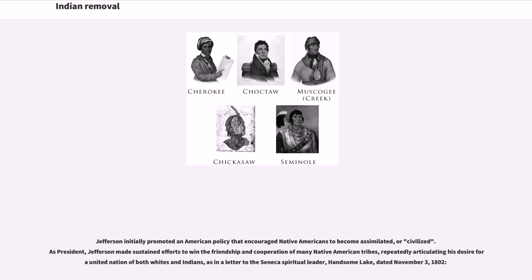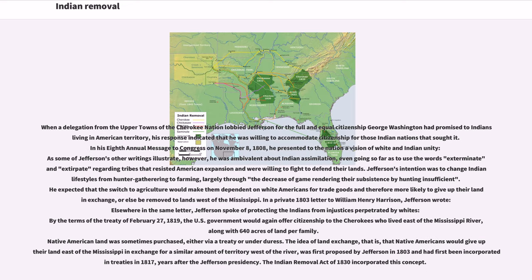Jefferson initially promoted an American policy that encouraged Native Americans to become assimilated, or civilized. As president, Jefferson made sustained efforts to win the friendship and cooperation of many Native American tribes, repeatedly articulating his desire for a united nation of both whites and Indians, as in a letter to the Seneca spiritual leader Handsome Lake, dated November 3, 1802. When a delegation from the upper towns of the Cherokee Nation lobbied Jefferson for the full and equal citizenship George Washington had promised to Indians living in American territory, his response indicated that he was willing to accommodate citizenship for those Indian nations that sought it.